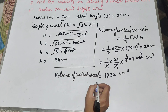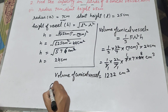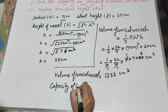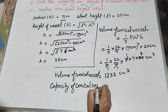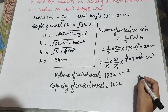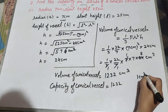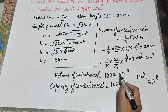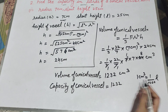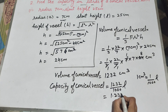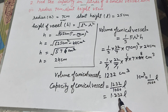Now we find capacity of this vessel in liters. To find capacity we change centimeter cubed to liters. We know 1 centimeter cubed equals 1 over 1000 liter, so we divide by 1000. It is equal to 1.232 liters. So the capacity of the conical vessel is 1.232 liters.